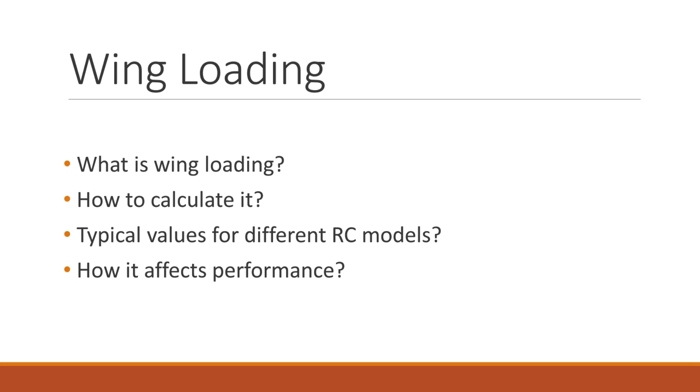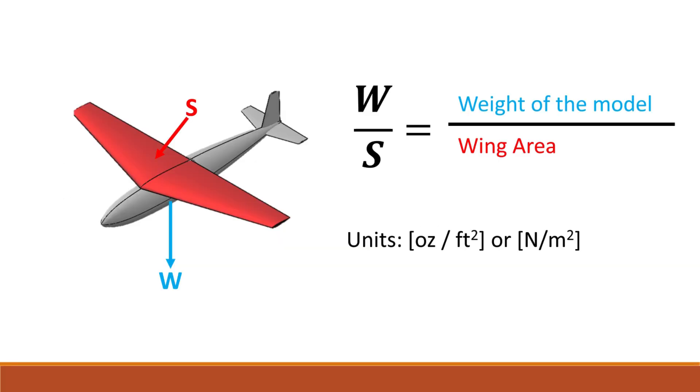In this video, we will look at what wing loading is, how to calculate it, how it differs for different types of RC models, and how it is used to determine the design's performance. Wing loading is simply the weight of the aircraft divided by the area of the wing. It is usually given in units of ounces per square feet or newton per square meter.